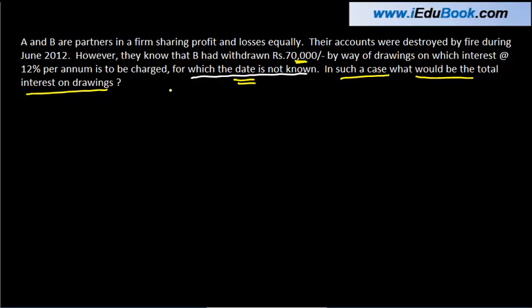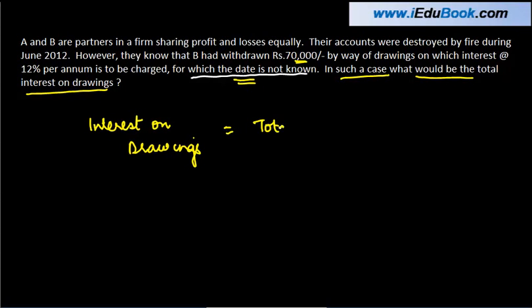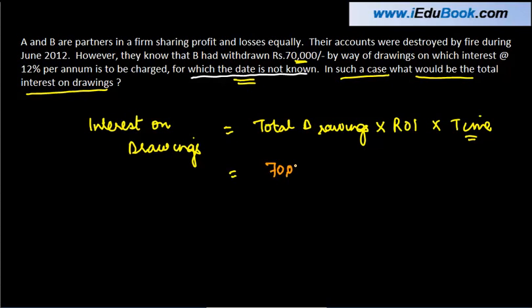In whatever cases we did till now, which are in the previous videos, we always had the date of withdrawal available to us. Because when you calculate interest on drawings, this has to be calculated as: total drawings into rate of interest into time, time being the period for which such withdrawals have been utilized. Now we know the total drawings is 70,000. We know the rate at which interest is to be charged is 12%, but we don't know what is the time.